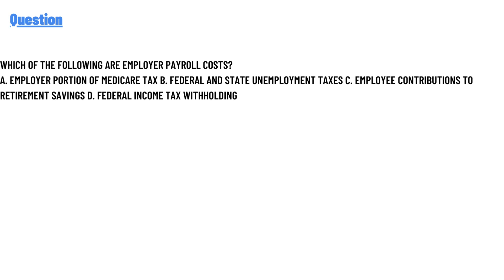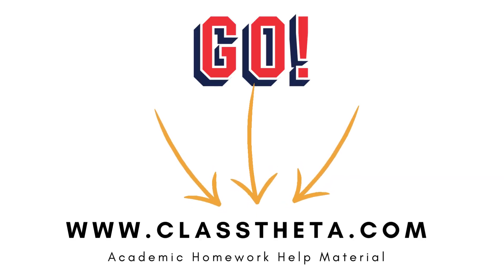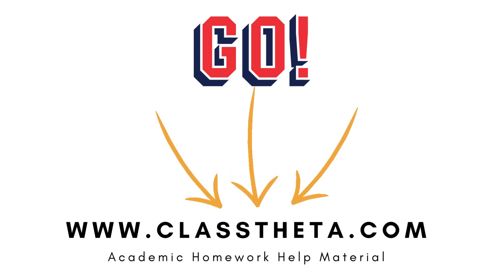The correct answer to the question is Option A — employer portion of Medicare tax — and Option B — federal and state unemployment taxes. That is the answer to the question. If you are searching for any other questions, please visit www.classtheta.com and find them in the search section.